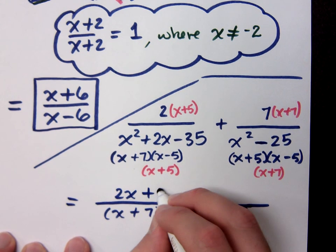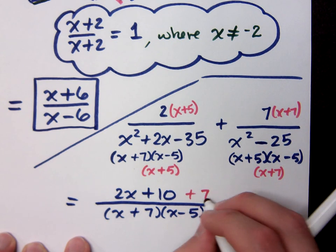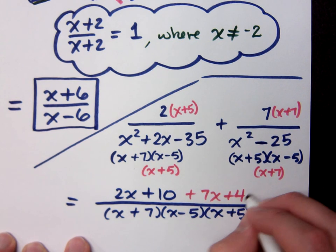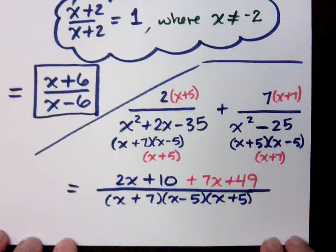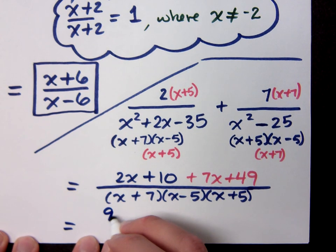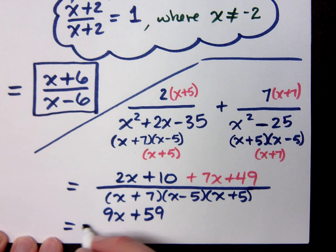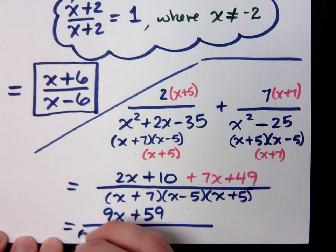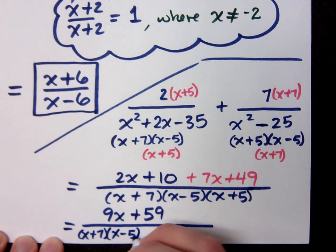You just have to multiply those numerators and tell me what we have. When you distribute correctly, it's 2x plus 10, and then what? 7x plus 49. 9x plus 59 all over x plus 7, x minus 5, x plus 5.